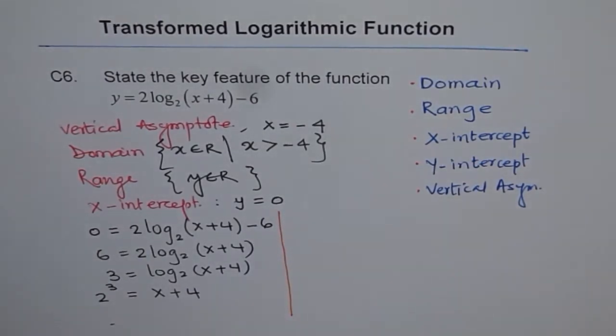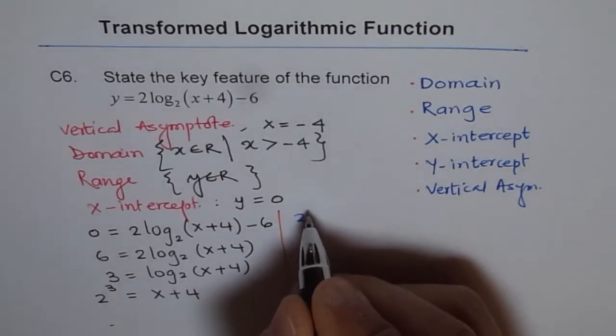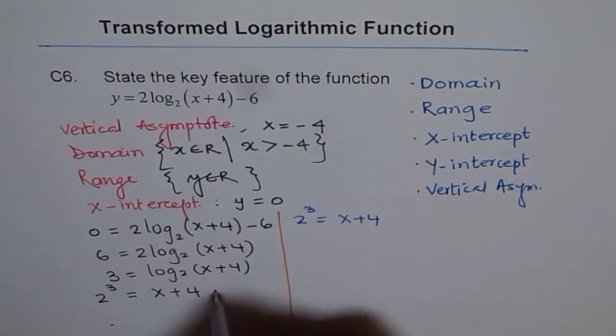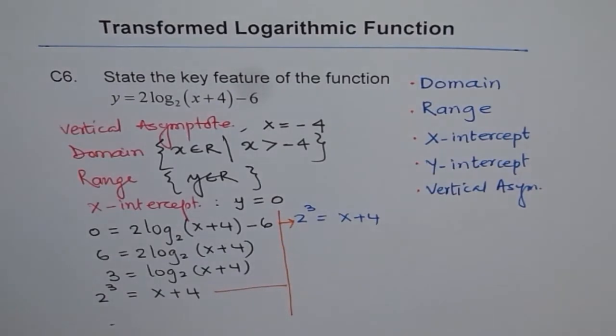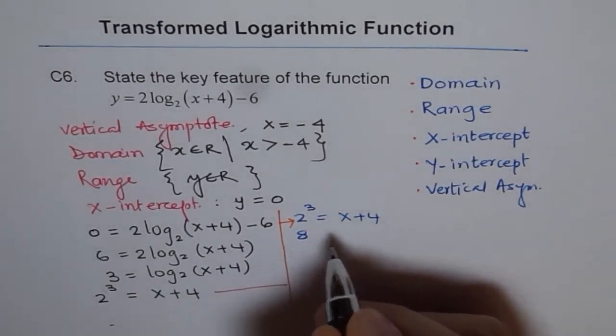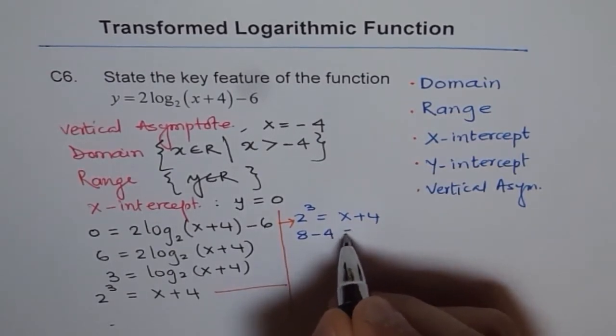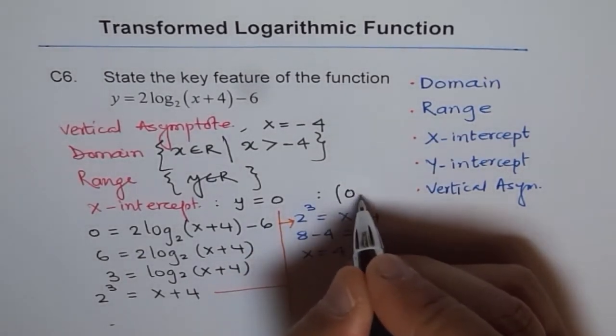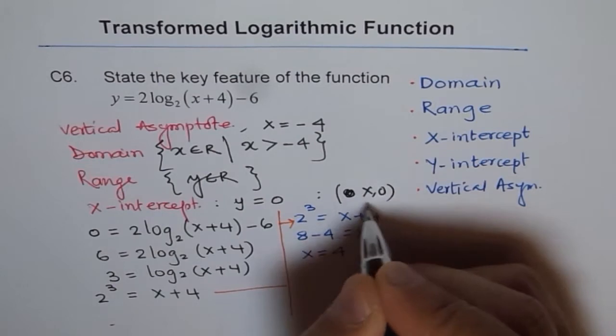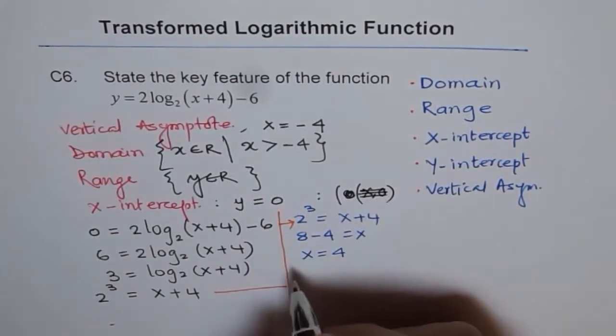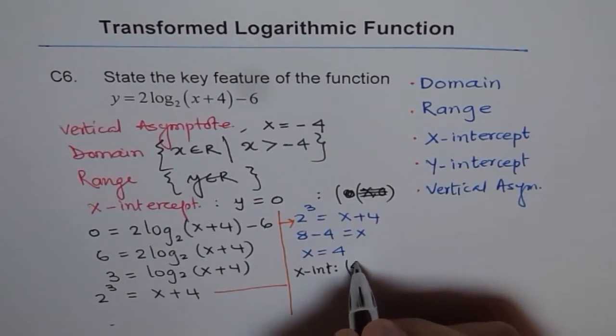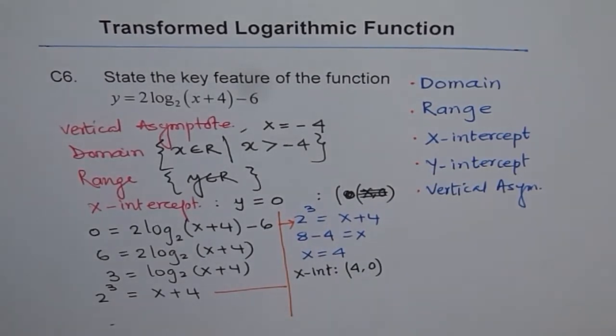2 to the power of 3 is 8. So now we can calculate the x-intercept. We already have 2 to the power of 3 equals x plus 4. I'm just rewriting this particular equation. Now we'll calculate from here, which is 8. So 8, and I'll bring 4 to this side, 8 minus 4 equals x, and therefore x equals 4. Therefore, the x-intercept for us is (4, 0). So we have x-intercept of (4, 0). So we got the x-intercept.